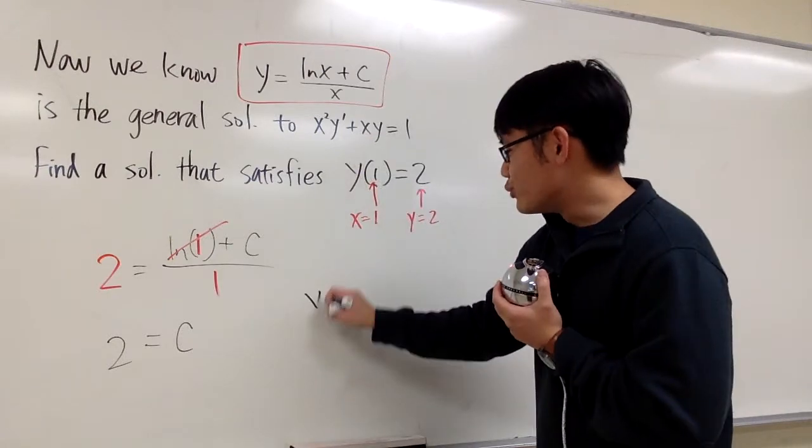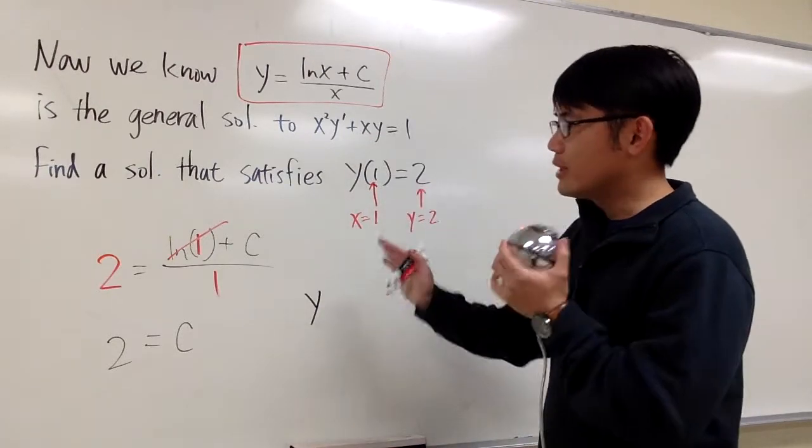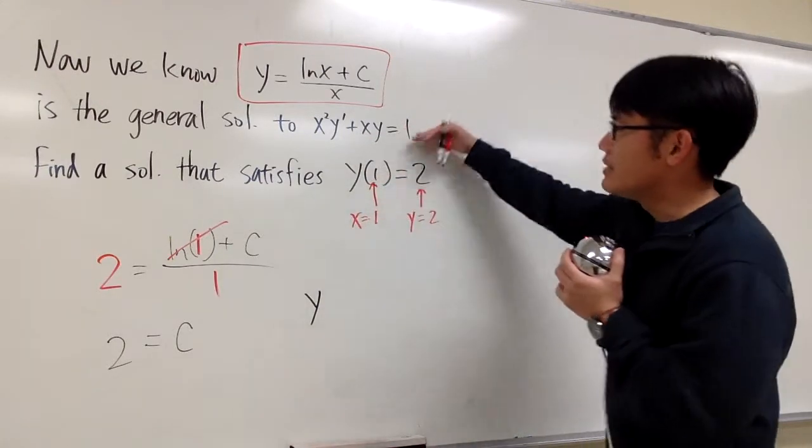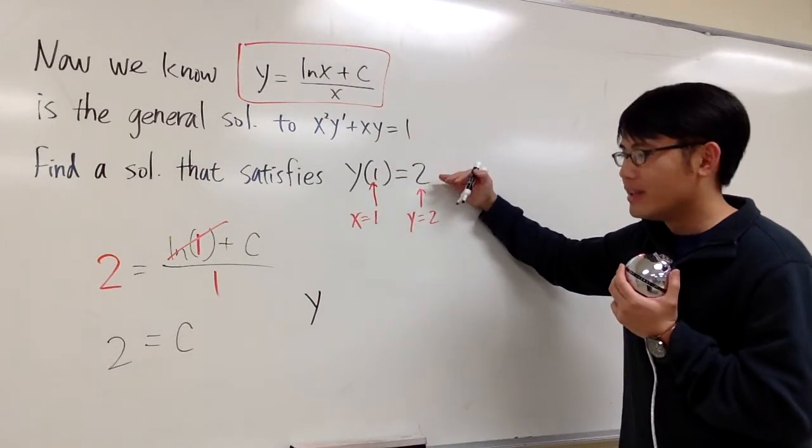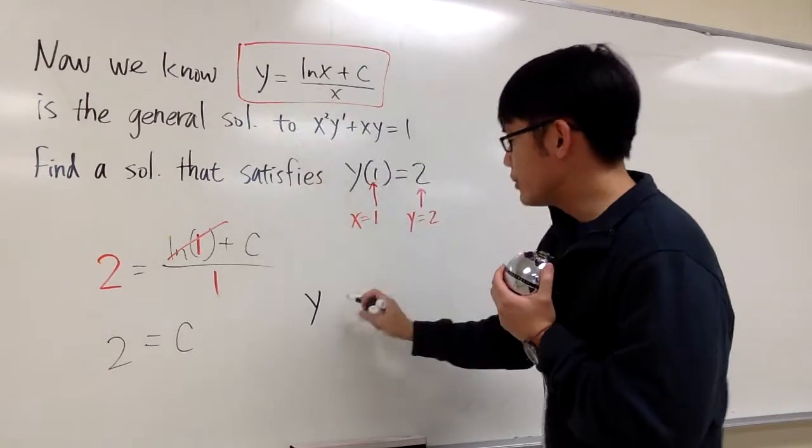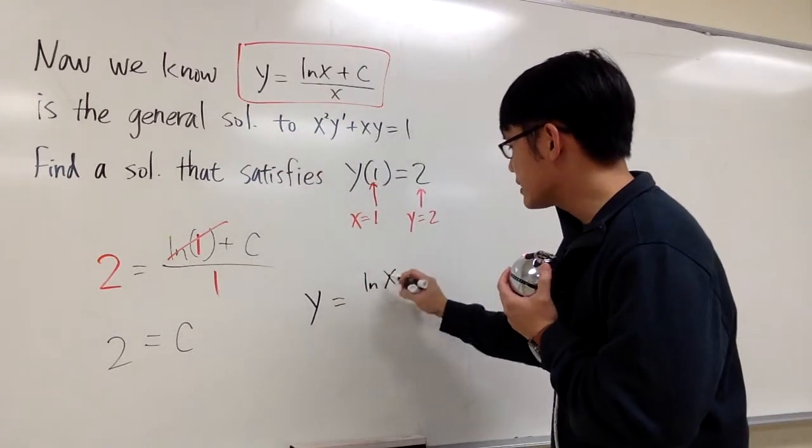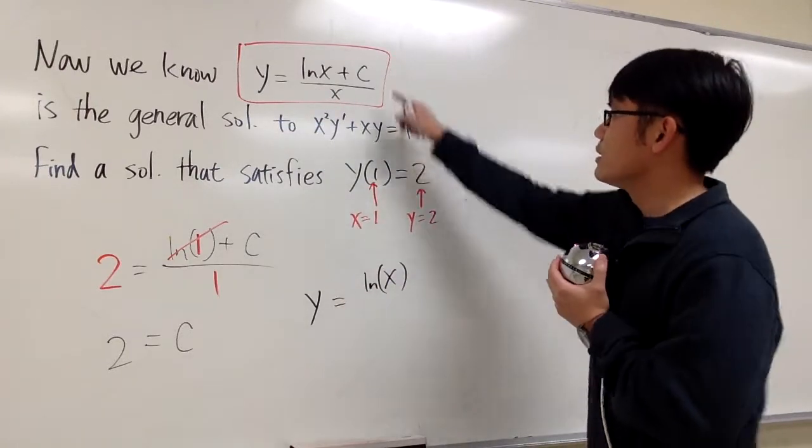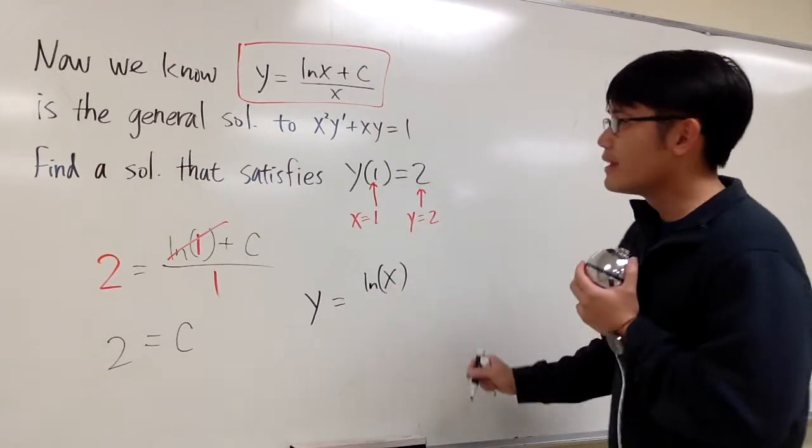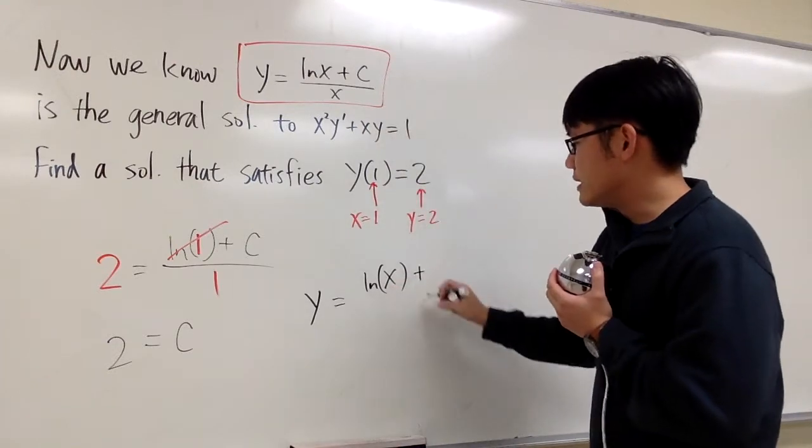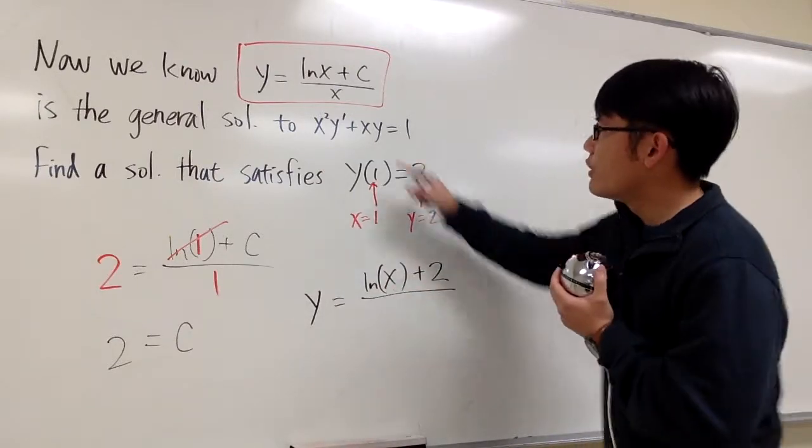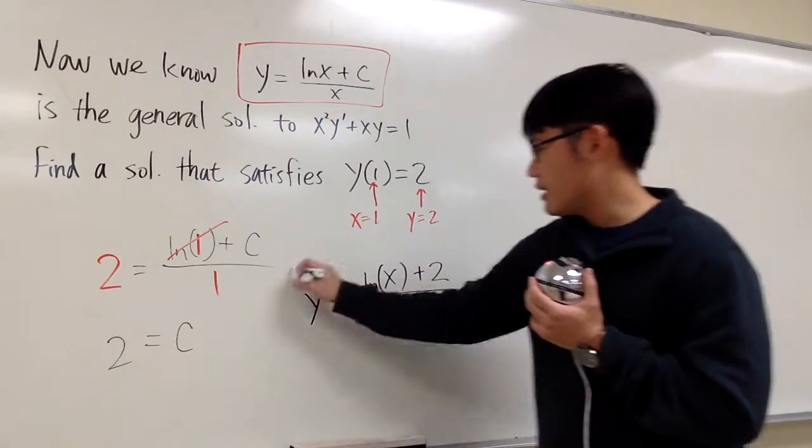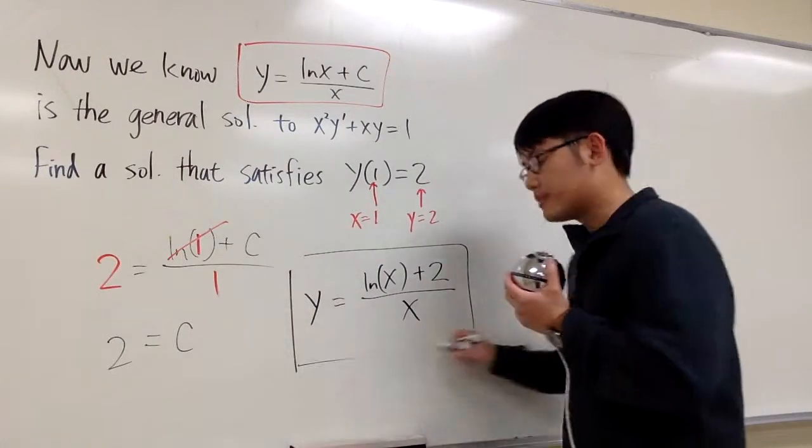We just need to repeat this down. The solution that we're looking for that satisfies this differential equation and also satisfies this initial condition is y equals ln x, and close parentheses to emphasize. Plus the c value, now we know it's specifically equal to 2, over the x. And this right here is the answer.